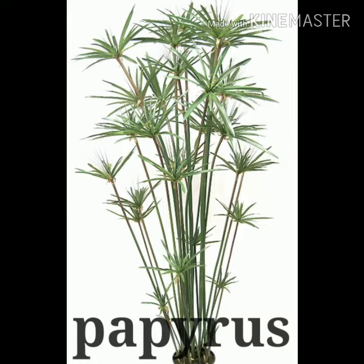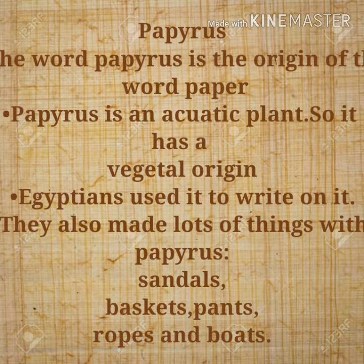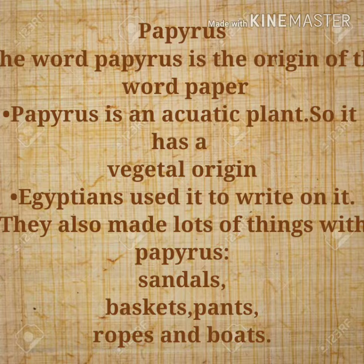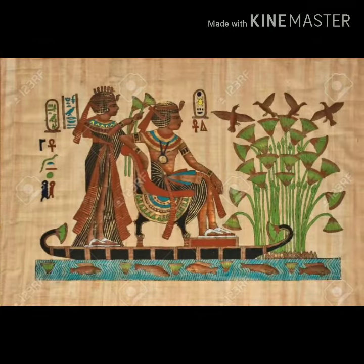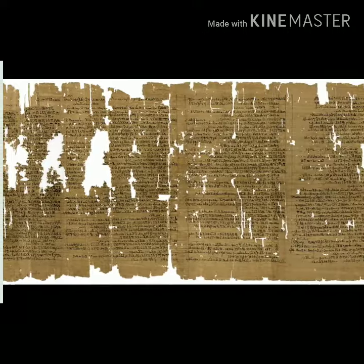Do you know what this is? It's papyrus. First of all, Egyptians started to make papyrus, which was similar to paper. The word papyrus is the origin of the word paper. They also made lots of things. For example, paper — it's an ancient paper.